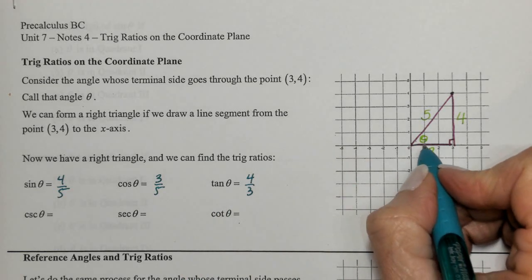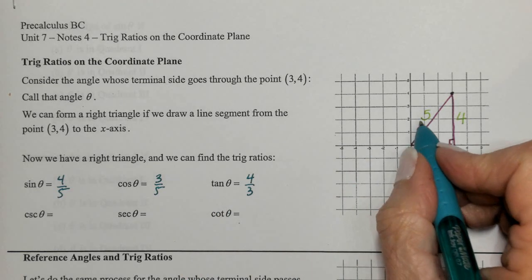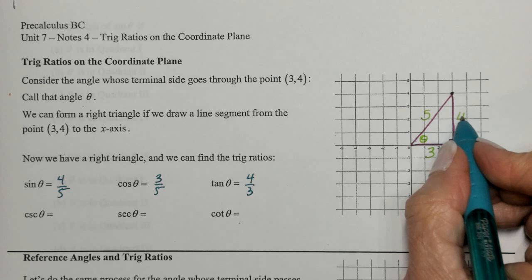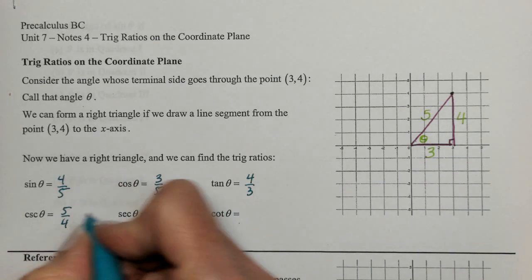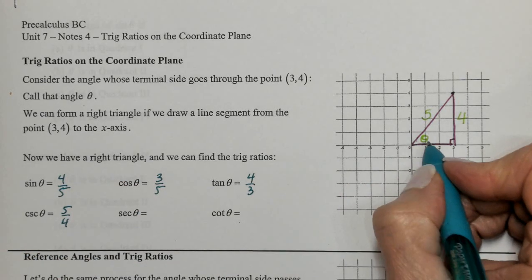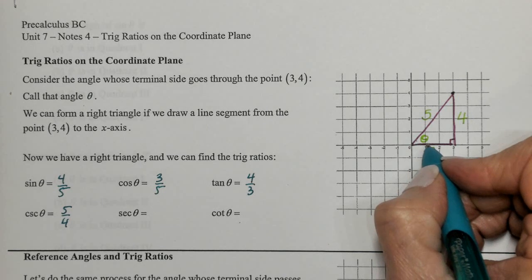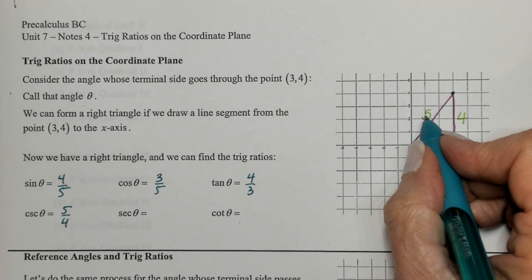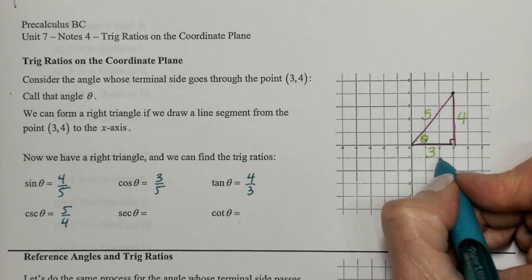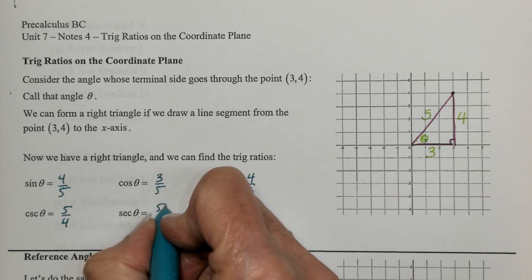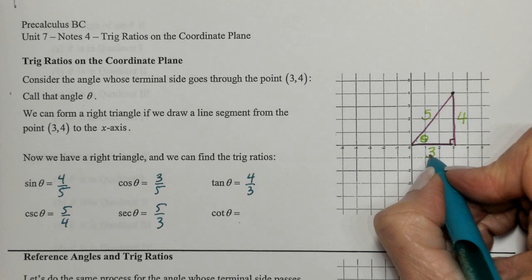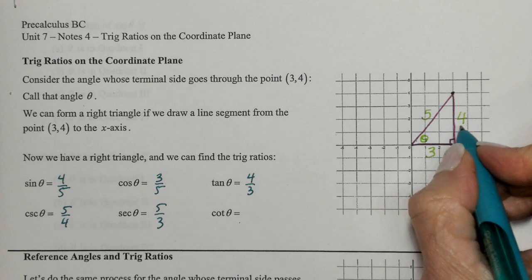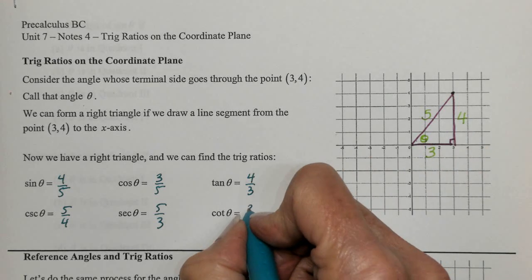Cosecant is the flip of sine, so hypotenuse over opposite: 5 over 4. Secant is the reciprocal of cosine, so hypotenuse over adjacent: 5 over 3. Cotangent is the reciprocal of tangent, so adjacent over opposite: 3 over 4.